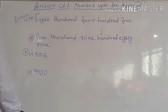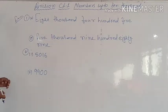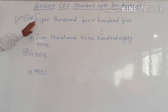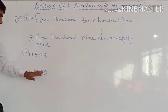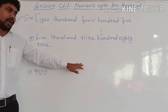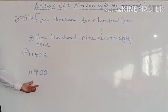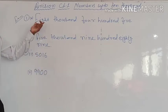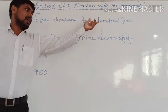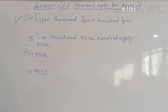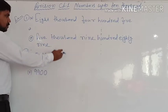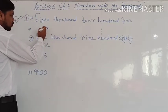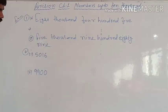You just have to understand the place values of the numbers — ones, tens, hundreds, thousands, and so on. Now in exercise 1.1, we have two types of questions: one is writing number names into numerals, and the other is writing numbers in words — number names.